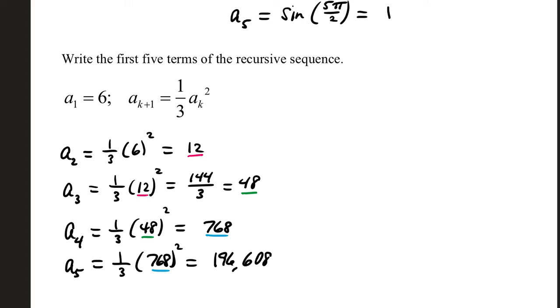Then, for a sub 3, you have 1 third times that previous answer, squared. It gets recycled in. 12 squared is 144 over 3. That divides out to 48. a sub 4 will use your result from a sub 3. Plug in 48. a sub 4 is 1 third times 48 squared. And you guys helped me out in class. That was 768.